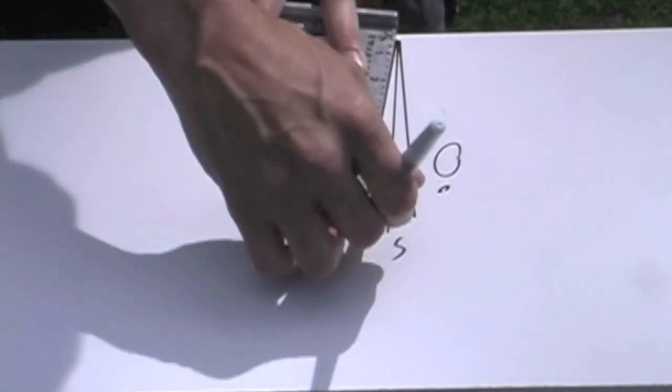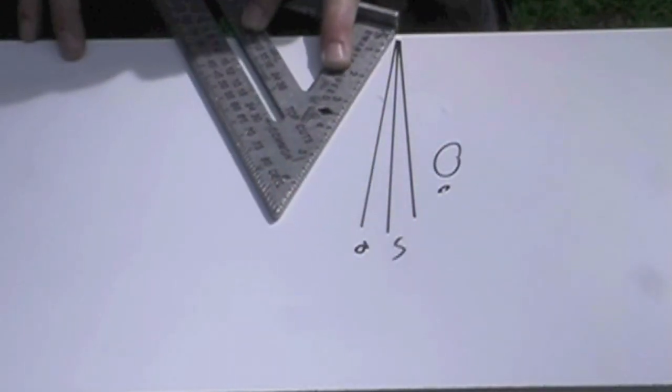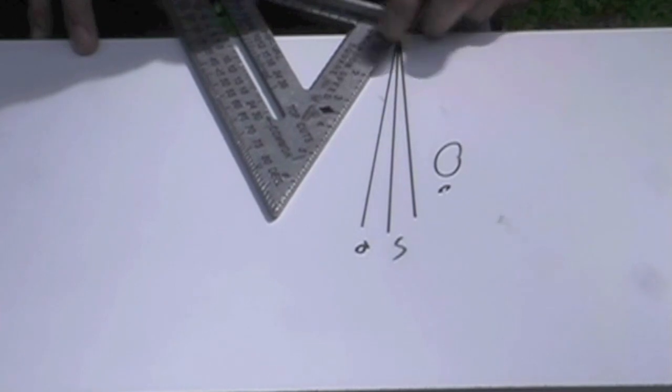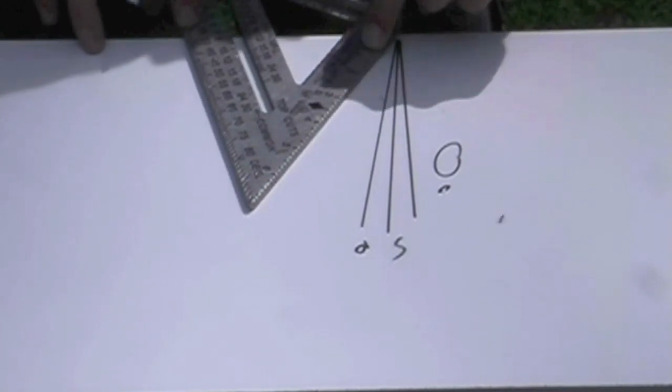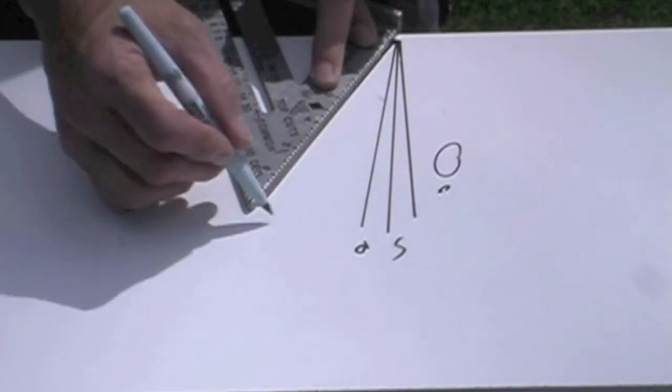If I want it at 30 degrees, I make sure I keep that pivot point in the same spot. Line the 30 right up on the edge, and that's 30 degrees.